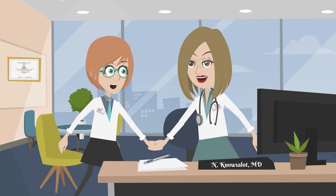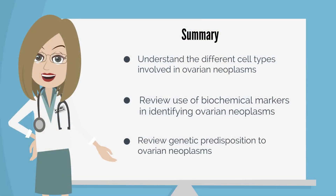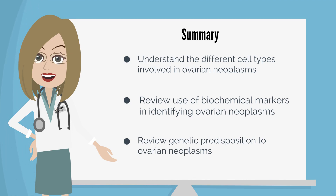Thank you for helping me understand the vast neoplastic potential of what I thought was a small blob of tissue — the ovary. I am definitely more prepared to see my patients tomorrow. This concludes this APCO Basic Science Objective video about ovarian neoplasms. You should be able to understand the different cell types involved, review the biochemical markers including CA-125 and larger sequences used, and review genetic predispositions to ovarian neoplasm, briefly BRCA and Lynch syndrome. Thanks for watching!